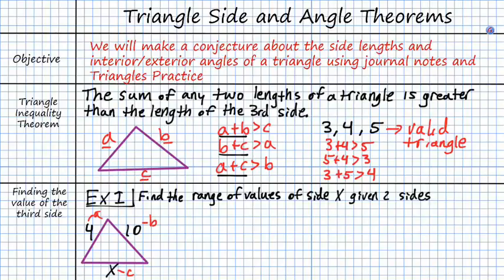So I know that x must be less than 4 plus 10, because I know that the sum of any two sides is greater than the length of the third. So I know that x is less than 4 plus 10. Well, that tells me an upper bound, right? I know that x is going to be less than 14,